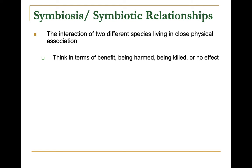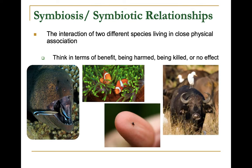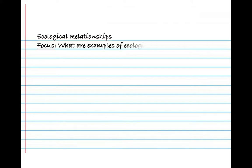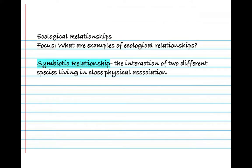Symbiotic relationships — students typically have heard of these. However, when they think of symbiosis, they tend to think of just the positive ones, things that are cooperative where both organisms benefit. But really, a symbiotic relationship is any relationship in which two species are living in close physical association. One species can benefit, another can be harmed, another could be killed. Let's start a new notes page called ecological relationships. A symbiotic relationship is the interaction of two different species living in close physical association.